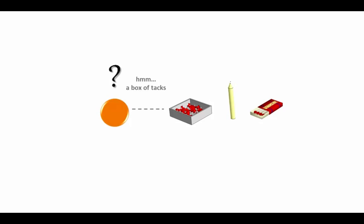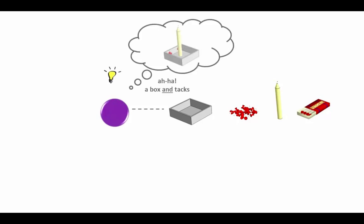To demonstrate this point, he repeated the candle problem again with new participants, but this time he placed the tacks next to the empty box. This time, the problem solvers could see that the box's function was not directly tied to holding the thumbtacks. As a result, virtually all the participants were able to solve the problem with relative ease.